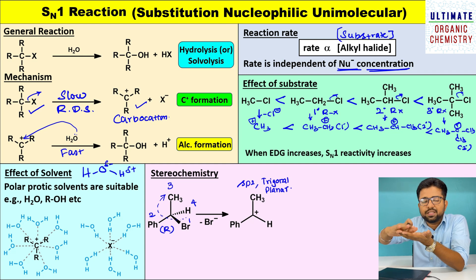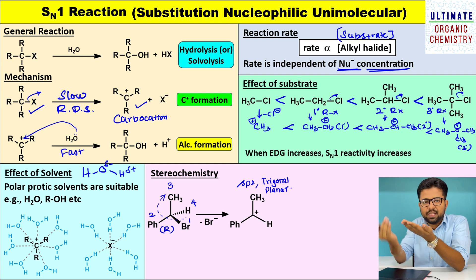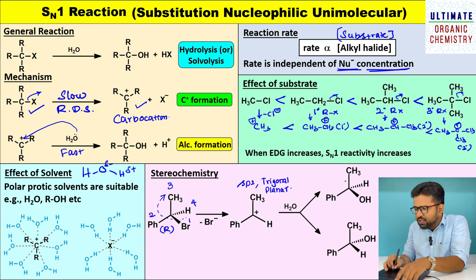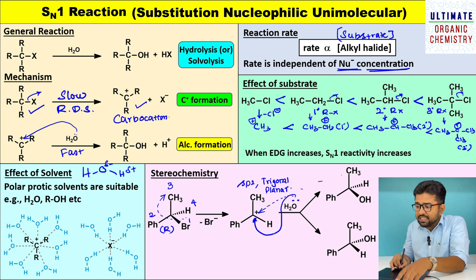Assume this carbocation is present on the trigonal plane. The incoming nucleophile — that is the water molecule — can approach the carbocation from the top or from the bottom. Both possibilities exist. In the second step, the water molecule lone pair can approach from the front side or from the back side. Both possibilities are there — front side attack probability is 50% and back side attack probability is 50%.